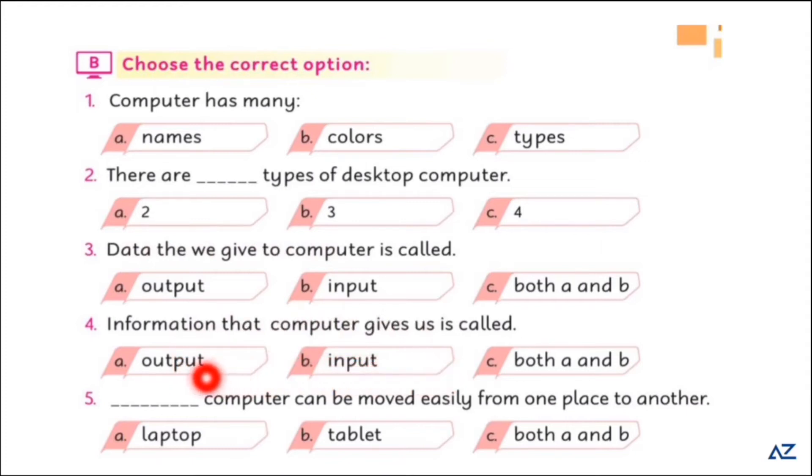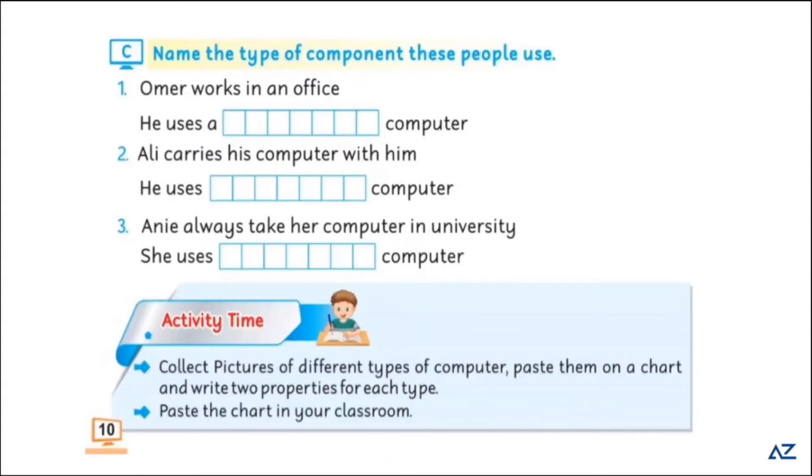Its answer is both a and b. Name the type of component these people use. Omar works in an office. He uses a desktop computer.